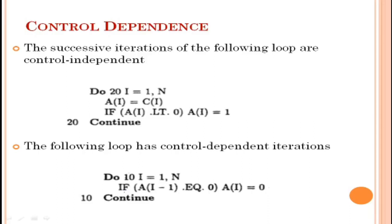Now, coming to control dependency. This refers to the situation where the order of execution of statements cannot be determined before run time. For example, with if-statements, the order of execution depends on the conditions. In this type of conditional sequence, it can take different paths after a conditional branch, which may introduce or eliminate data dependency among instructions.